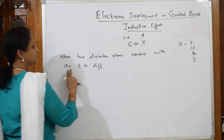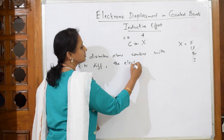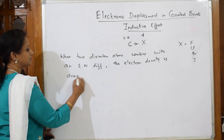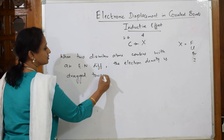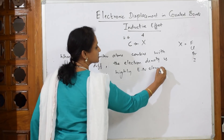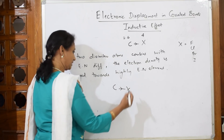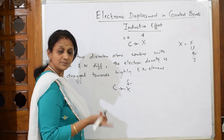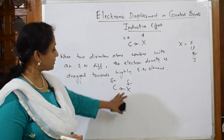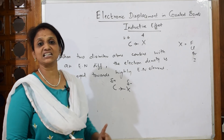When two dissimilar atoms combine with an electronegativity difference, the electron density is dragged towards the highly electronegative element. The atom that accepts the electron cloud attains a partial negative charge, and the other atom gets a partial positive charge. This particular concept is called the inductive effect.